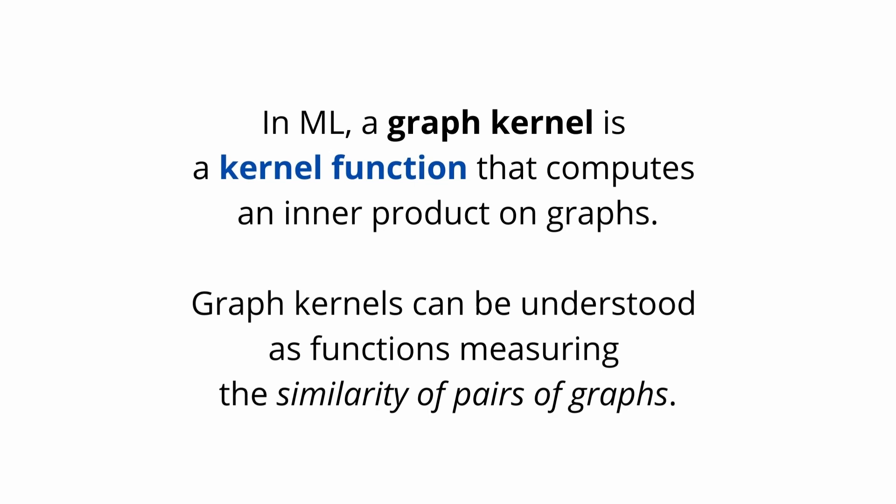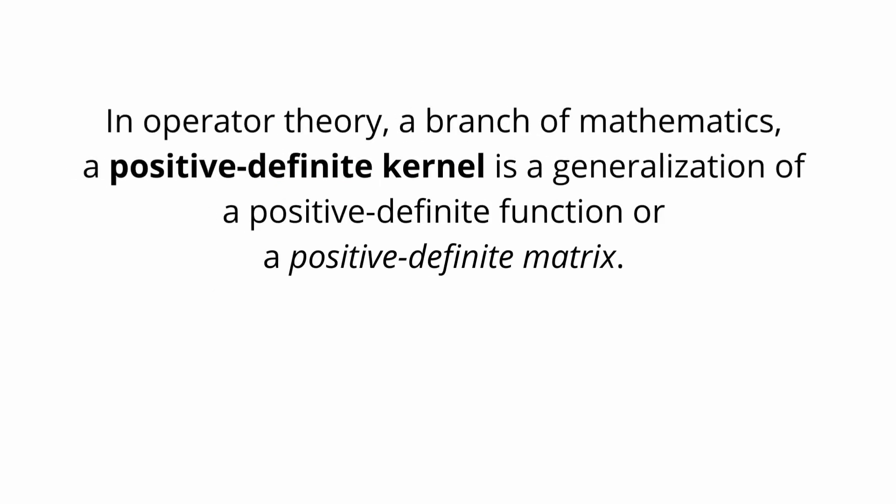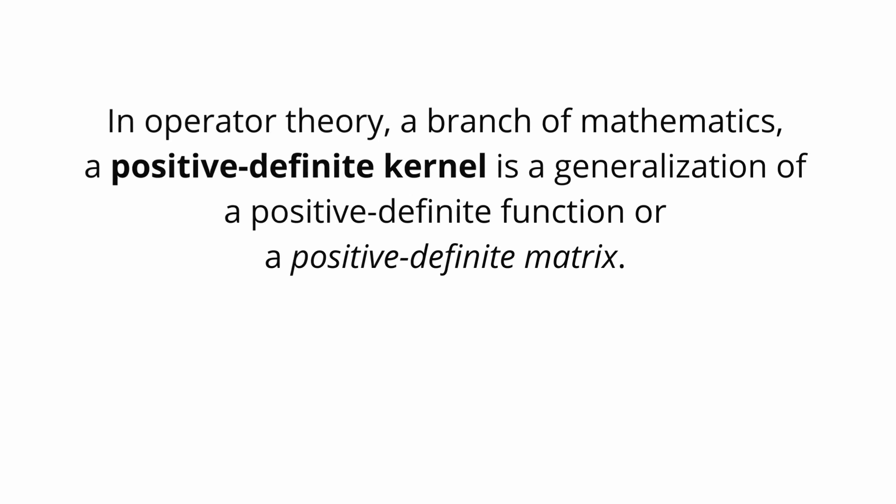In machine learning, a graph kernel is a kernel function that computes an inner product on graphs. This means graph kernels can be understood as functions measuring the similarity of pairs of graphs. In operator theory, a branch of mathematics, a positive definite kernel is a generalization of a positive definite function or, more simply, of a positive definite matrix.